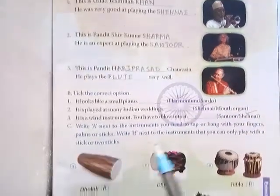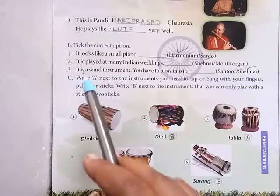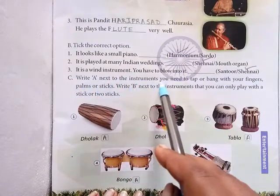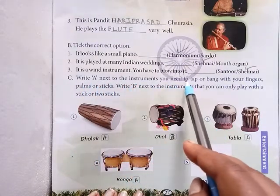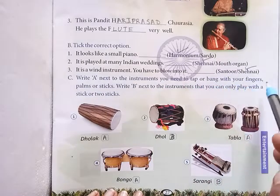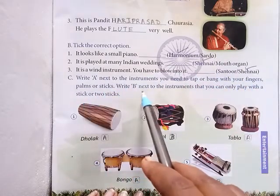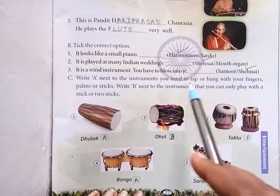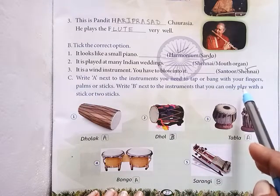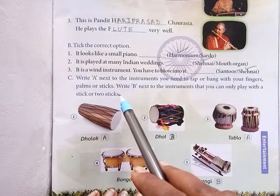Question number C. Write A next to instruments you need to tap or bang with your fingers or palms. Write B next to instruments that you can only play with a stick or two sticks.